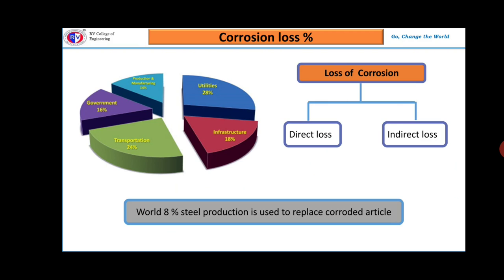It is estimated that around 8% of steel production is used to replace only corroded articles. Corrosion loss is enormous. If you consider indirect loss, loss of useful property of a metal results in loss of efficiency. In case of chemical industries, there will be a decrease in production rate due to low efficiency of plants and replacement of corroded equipment is time consuming.